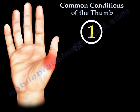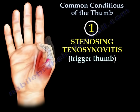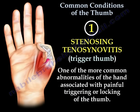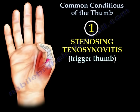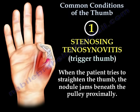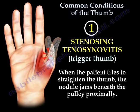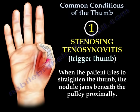The first condition is tenosing tenosynovitis — we call it trigger thumb. It is one of the more common conditions of the hand, especially the thumb, and is associated with painful triggering or locking of the thumb. When the patient tries to straighten the thumb, the nodule jams beneath the pulley proximally.